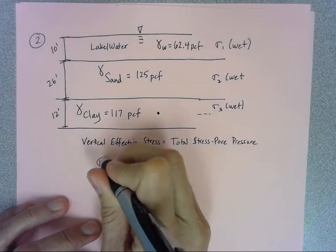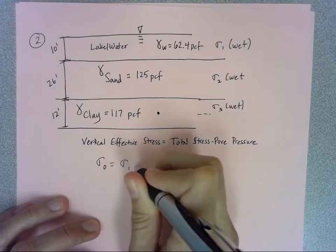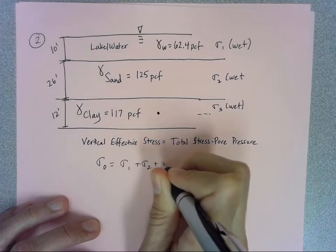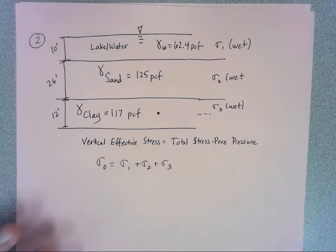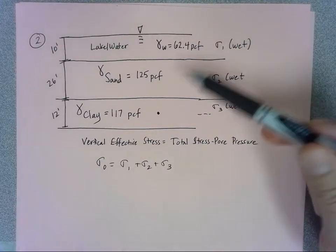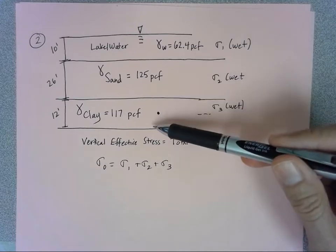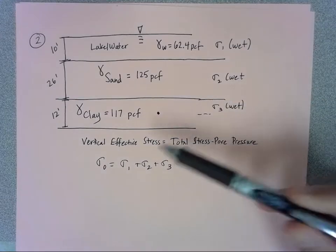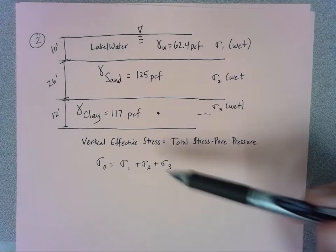My sigma naught is going to be the sum of all of these layers, but there's a trick here. Remember, I have to subtract gamma water from every gamma as I go because I have to subtract that pore pressure from the total stress to get the vertical effective stress.